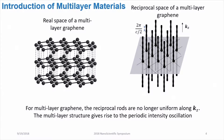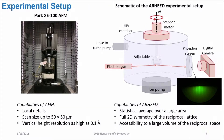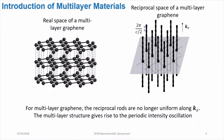What if we don't have a monolayer but a multilayer material? The only difference is that the reciprocal space will no longer be a uniform rod. Instead, it will show what is in this figure, which has some intensity oscillation along the Kz direction.